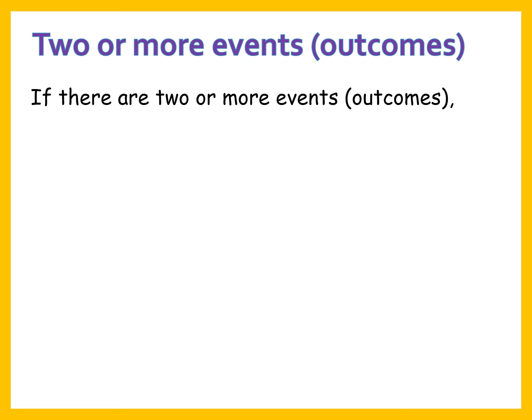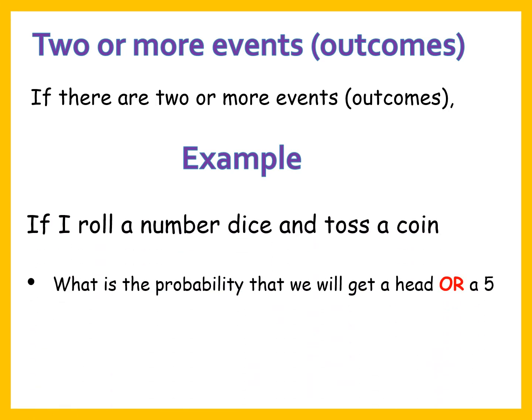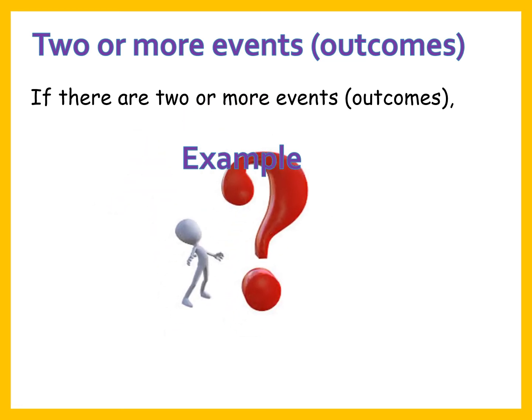When we have two or more events — for example, we rolled a dice and tossed a coin — what is the probability that we will get a head or a 5? Our probability calculation here is about head or 5. If someone gets one of them, the condition is satisfied. There are two events happening with two different outcomes. We will see the answer at the end of this video.